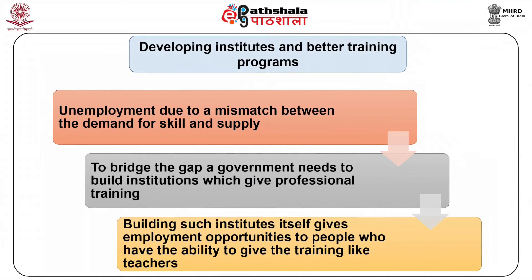Third, developing institutes and better training programs. Another step toward combating unemployment is to develop institutes that give training to workers. There is mass-level unemployment due to a mismatch between the demand for skills and their supply. To bridge the gap, the government needs to build institutions providing professional training so workers can get better opportunities in the market. Building such institutes itself creates employment for people with the ability to provide training, such as teachers.